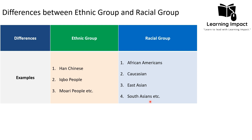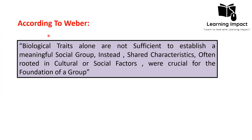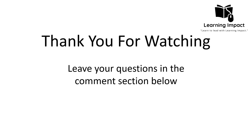Before winding up, let's discuss Max Weber's famous view on ethnic and racial groups. Weber said that biological traits alone are not sufficient to establish a meaningful social group; instead, shared characteristics rooted in culture or social practice are crucial for the formation of a group. In conclusion, both biological traits associated with the racial group and shared culture associated with the ethnic group are equally important in forming a social group in society.